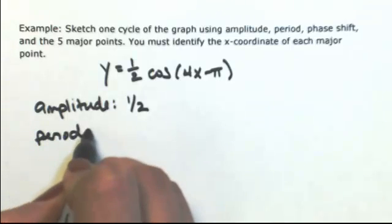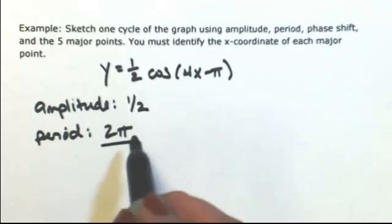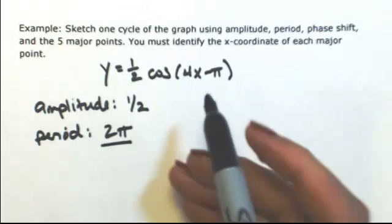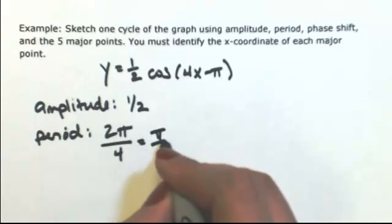To find the period, we take the original period of cosine, which is two pi, and divide it by whatever is in front of x, which is four, or reduce, pi over two.